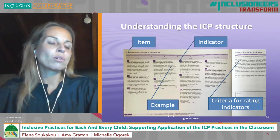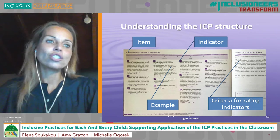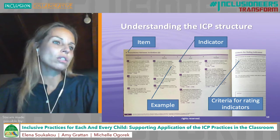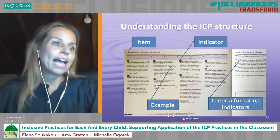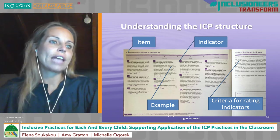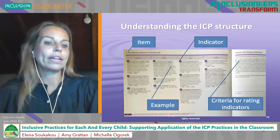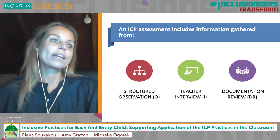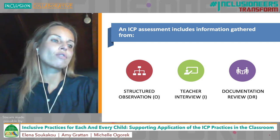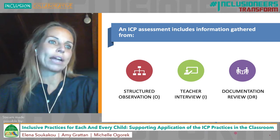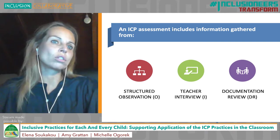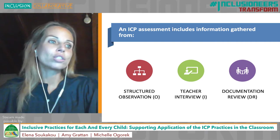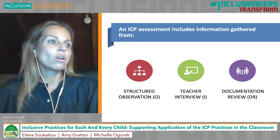There are also a number of examples found in many of the indicators. These show ideas of what those strategies might look like when used in the classroom. Many of the indicators have specific criteria for observing and rating indicators. When conducting an ICP assessment, we gather information and base our ratings on three sources of evidence: primarily through classroom observation of daily routines, activities, and practices that take place indoors and outdoors for groups of children ages 2 to 5; a short interview with a teacher following the observation; and also documentation review.